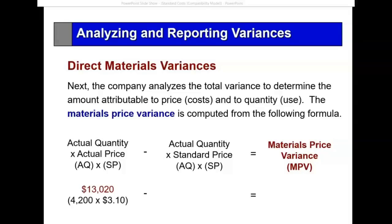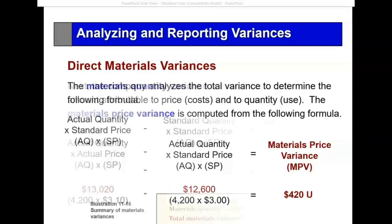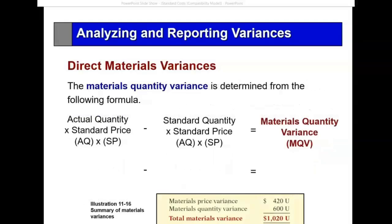Therefore, 4,200 pounds times $3.10 versus 4,200 pounds times $3.00 — giving a material price variance of $420 unfavorable. That's not that significant. So let's look at the quantity variance. The quantity variance formula is: actual quantity times the standard price minus standard quantity times the standard price — freezing the standard price and looking at the difference in quantity.